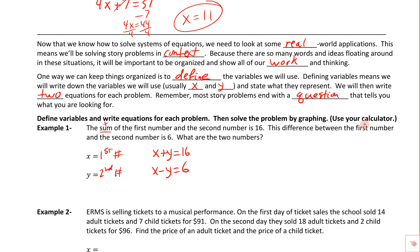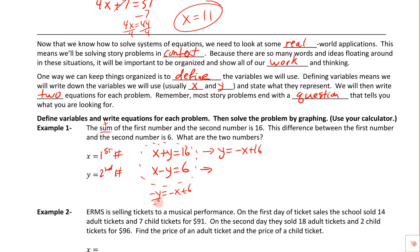To graph these on the calculator, we put them in slope-intercept form. The first equation becomes y = -x + 16. For the second, moving x to the other side gives -y = -x + 6, then dividing everything by -1 gives y = x - 6. Those are the two equations we'll graph.